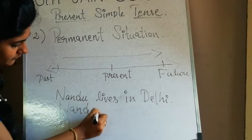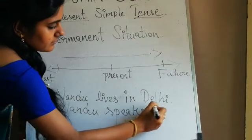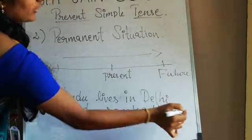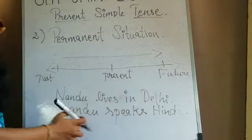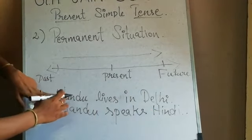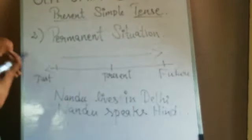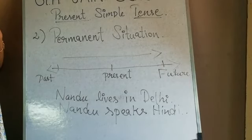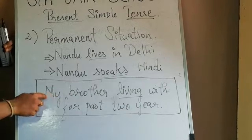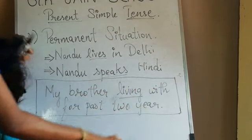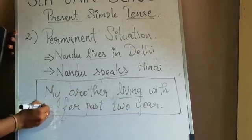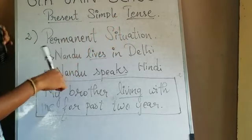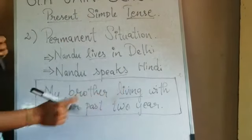Another example: 'Nangdu speaks Hindi.' His mother tongue is Hindi — this is a permanent situation. We cannot write 'Nangdu living in Delhi,' because that would be present continuous tense. Present simple tense usage for permanent situations requires the base verb form: 'Nangdu lives in Delhi,' 'Nangdu speaks Hindi' — these should be in permanent form.